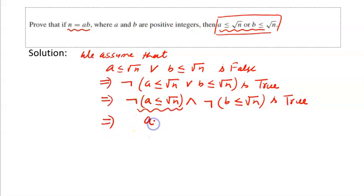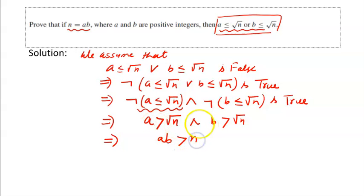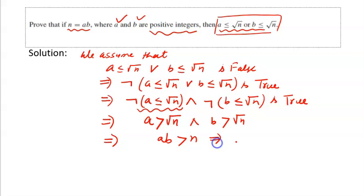The negation of a ≤ √n is a > √n. Don't make the mistake of writing greater than or equal to — the negation of a ≤ √n is strictly a > √n, and similarly b > √n. So both a > √n and b > √n are true. Since both a and b are positive integers, we can multiply: a × b is greater than n.